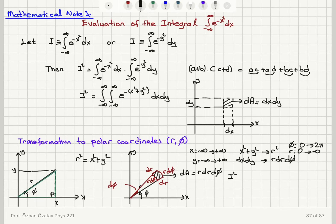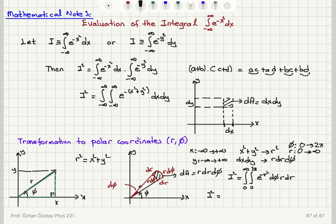Now I squared becomes the integral from zero to infinity in r, and zero to two pi in φ, of e to the minus r squared, r dr dφ. Since φ only appears in dφ and not in the exponential, the integral over φ simply gives two pi. So I squared equals two pi times the integral from zero to infinity of r e to the minus r squared dr.